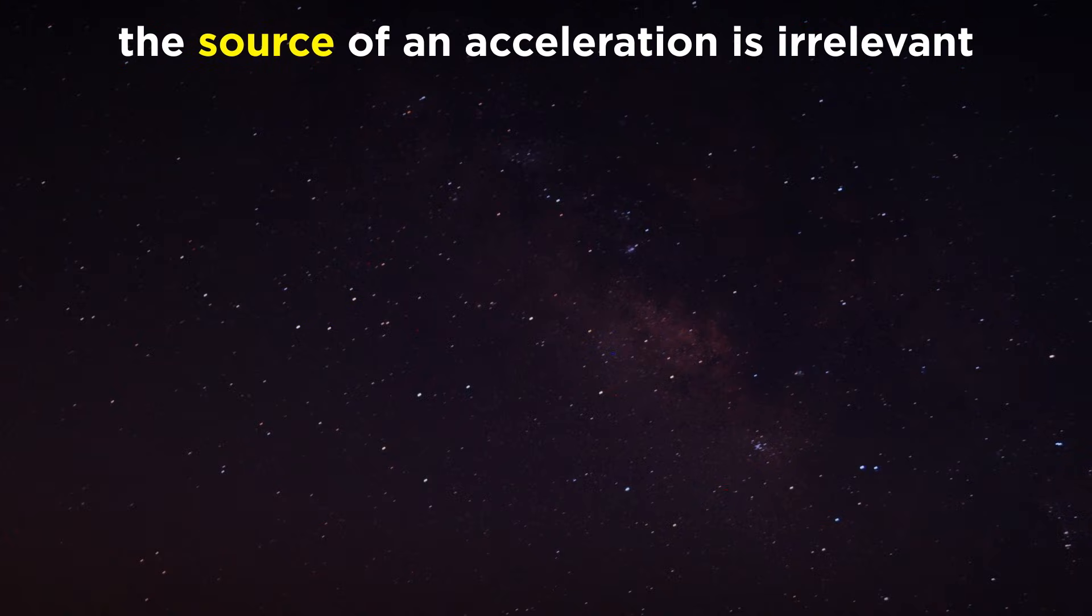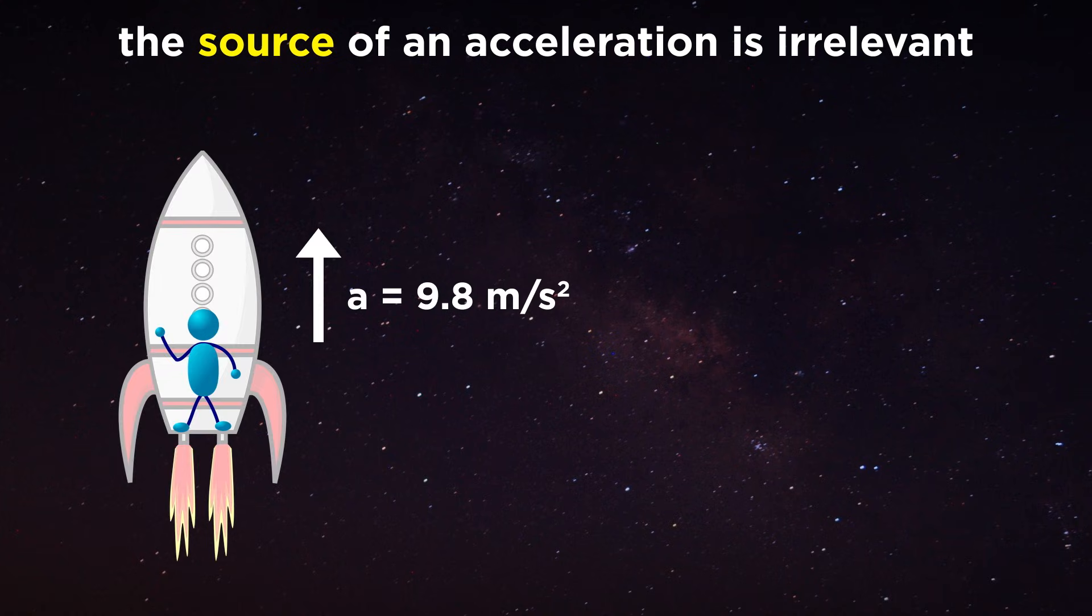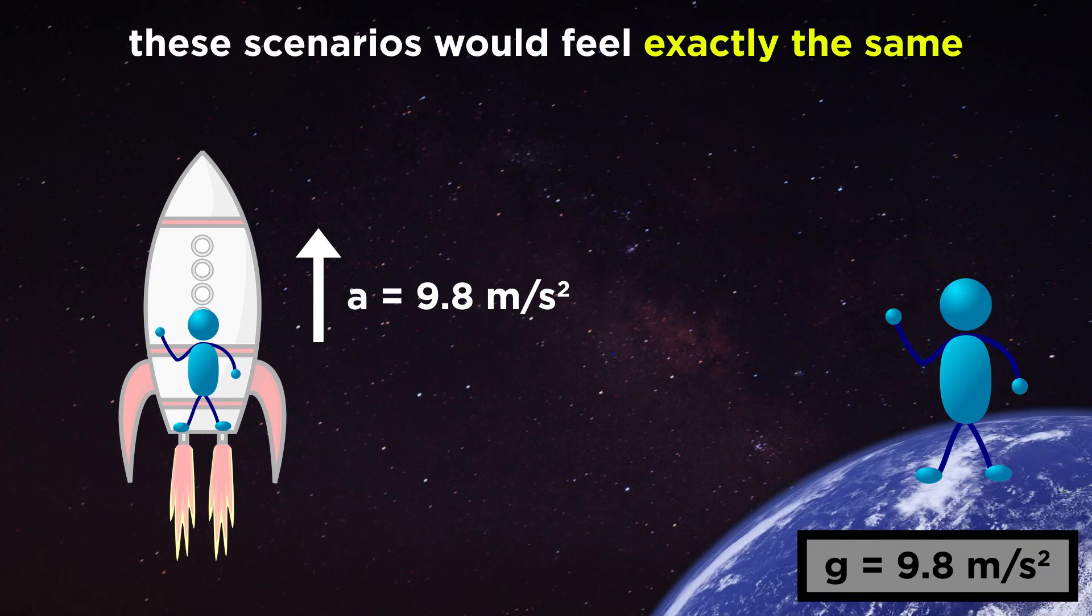One result of this is the idea that the source of an acceleration has no effect on the force imparted, such that a ship in deep space accelerating at 9.8 meters per second squared would impart a force on someone inside that would feel exactly like the gravitational pull on the surface of the earth.